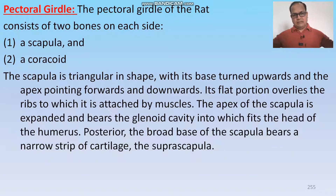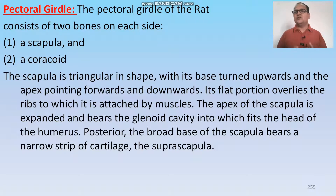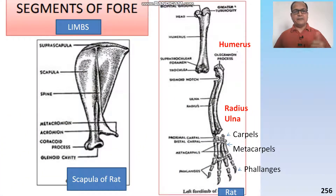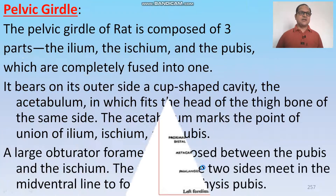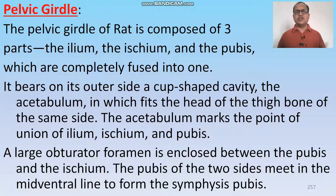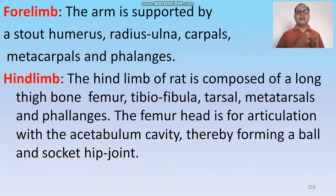The pectoral girdle is the shoulder girdle, made up of the scapula and coracoid. These two bones unite to form the glenoid cavity where the head of the humerus is joined. The scapula has a broad part and the coracoid is the small part; together they form the glenoid cavity. The forelimb is supported by the humerus, radio-ulna, carpals, metacarpals and phalanges. The pelvic girdle is made up of three bones: ilium, ischium and pubis, which unite to form the acetabulum cavity where the head of the femur fits. The hind limbs are supported by the femur, tibio-fibula, tarsals, metatarsals and phalanges.